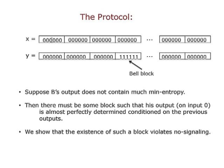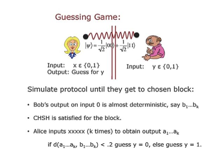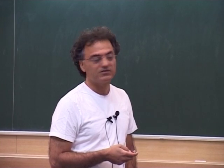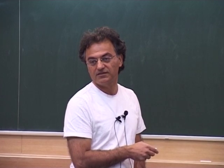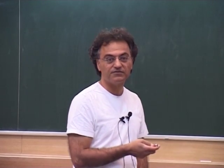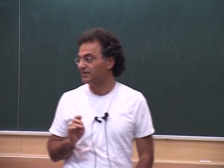Given this condition, what we show is that the existence of such a block violates no-signaling. Here's how: we play a guessing game where Alice and Bob can't communicate with each other but share entanglement. Alice gets a random input bit X, Bob gets random input bit Y, and Alice must guess Y. Since they're not allowed to communicate, the maximum chance she has of doing this is one half. So if you can prove it's bigger than one half, you have a contradiction.